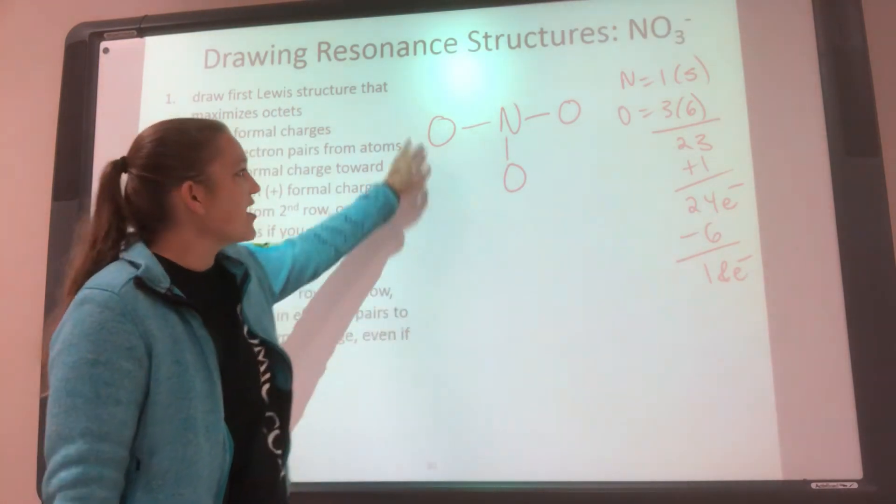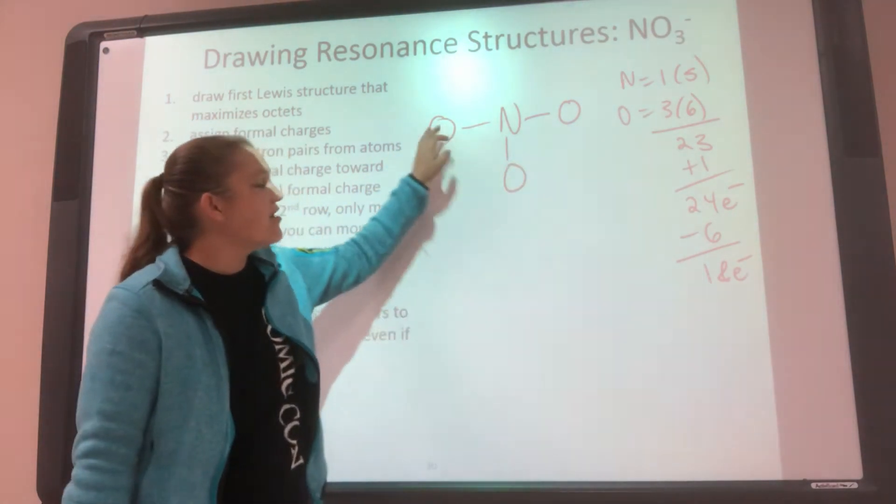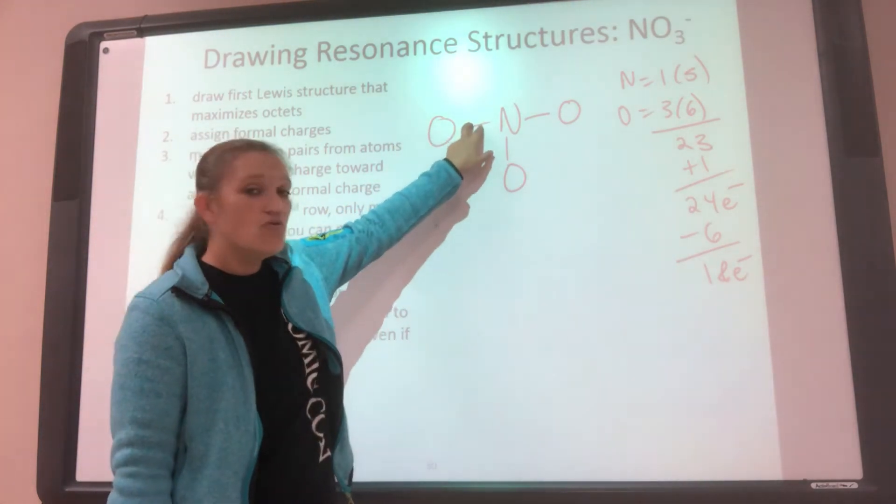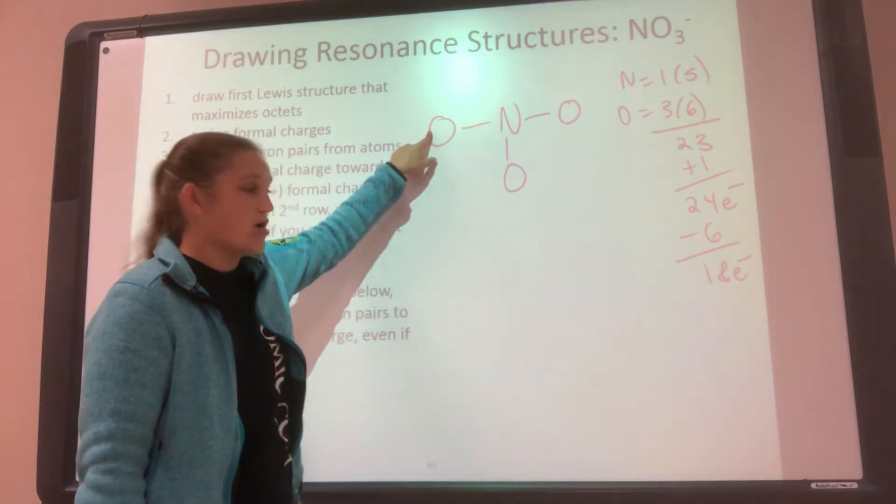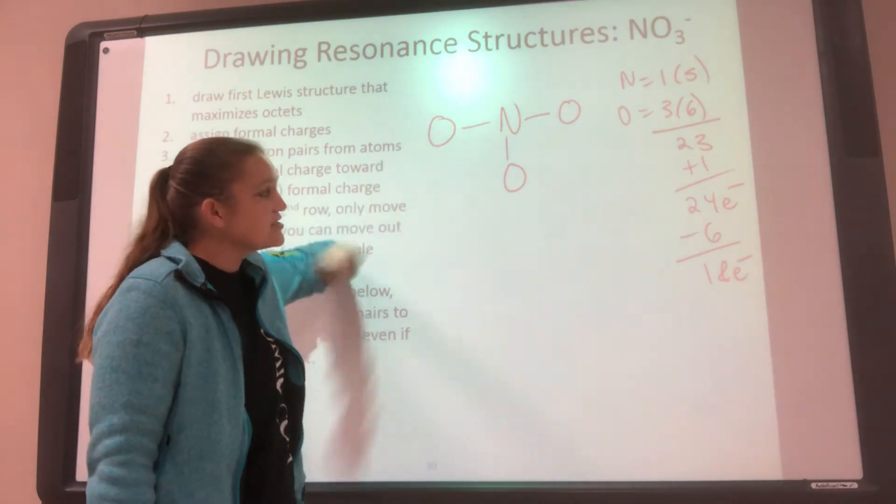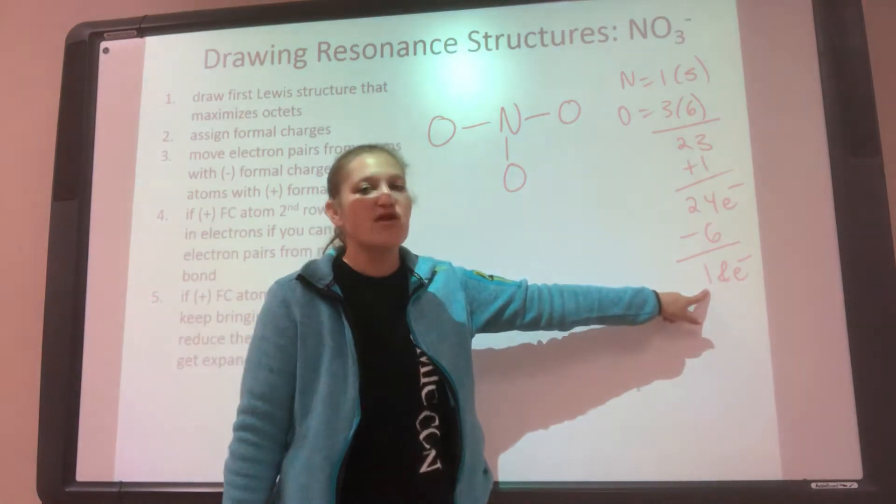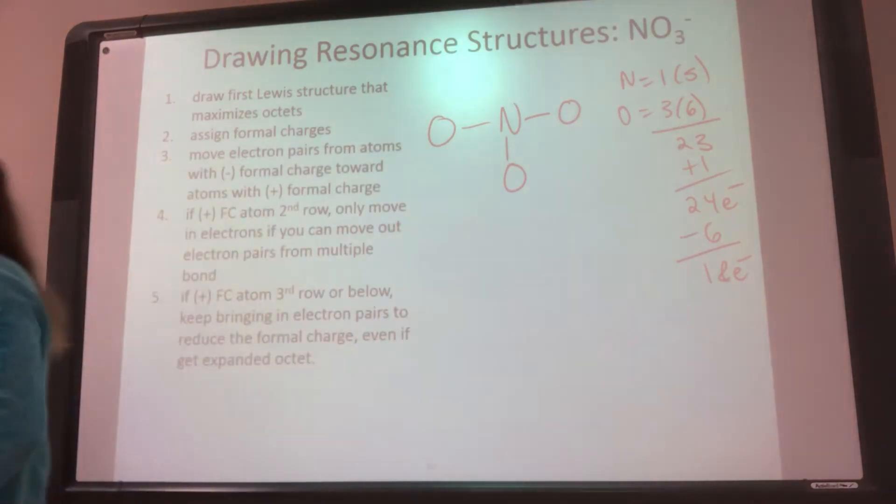Next part, make these outside atoms happy. He wants 8. He's an oxygen. He wants 8. He has 2, so that means he needs 6 more. So he wants 6, he wants 6, he wants 6. That's 18. I have 18, so I do it. So everybody gets their electrons.